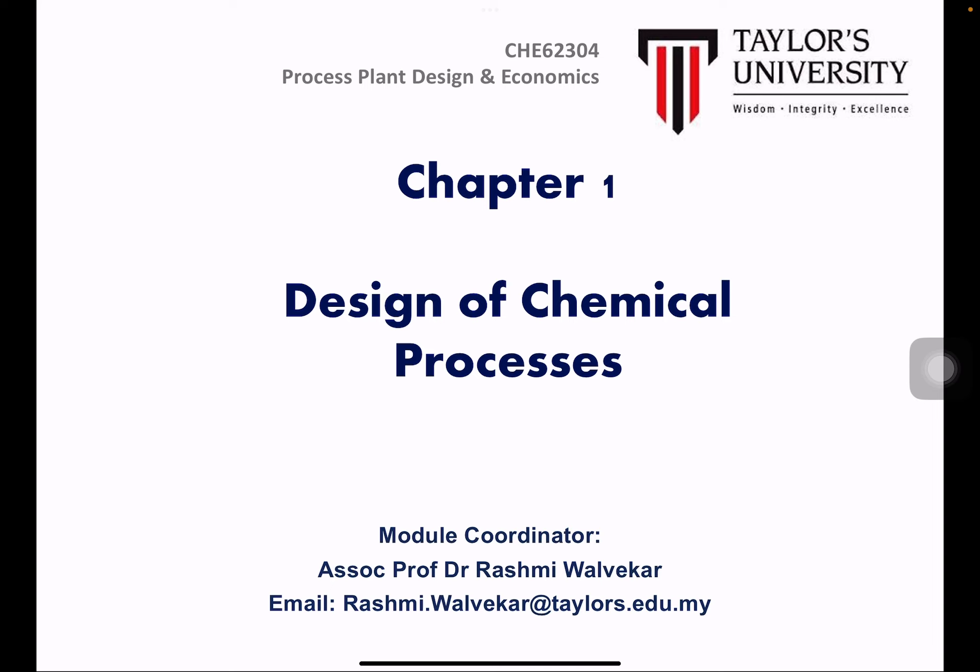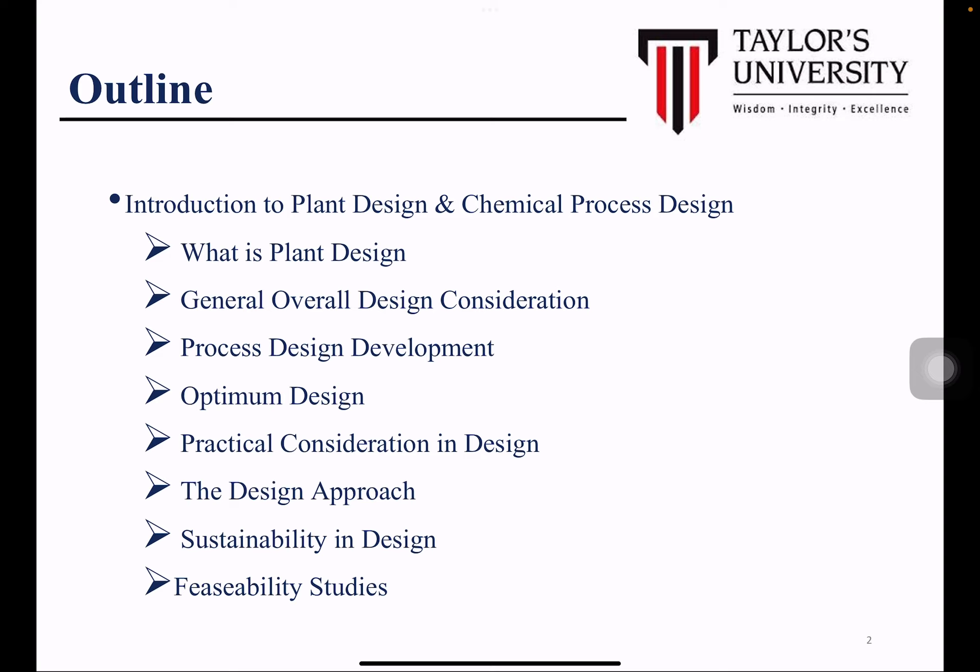This is Lecture One on Process Plant Design and Economics. Today we are going to discuss the design of chemical processes. The outline for today's class covers: what is plant design, general design considerations, how to develop a process design, how to optimize it, various strategies, practical considerations, sustainability in design, and feasibility studies.